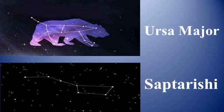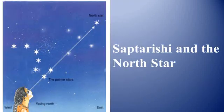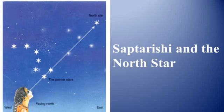Here you can see the picture of Ursa Major — it is also known as Big Bear. We also have the picture of Saptarishi; it is a group of seven stars. Now we can locate the position of the pole star with the help of the Saptarishi. You will notice that if an imaginary line is drawn joining the pointer stars and extended further, it will point to the pole star.